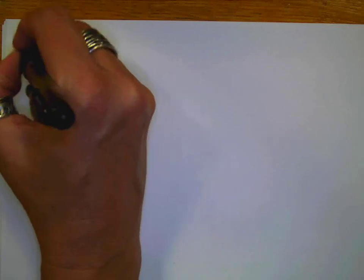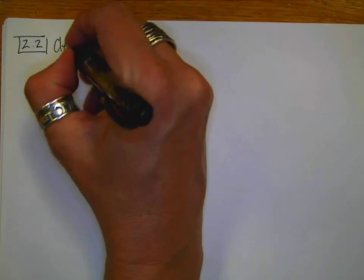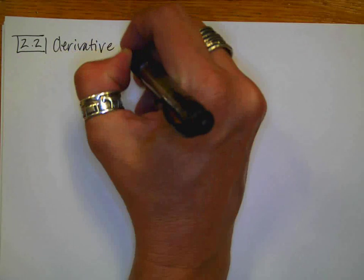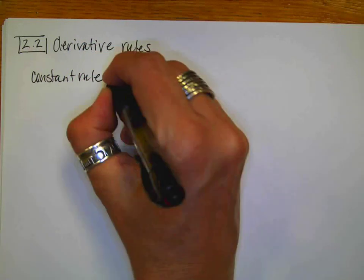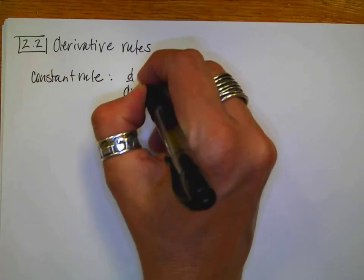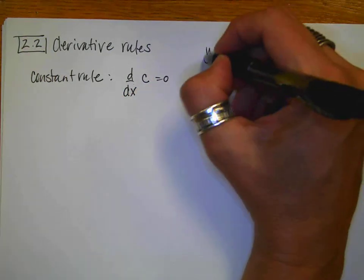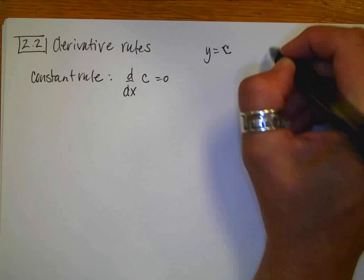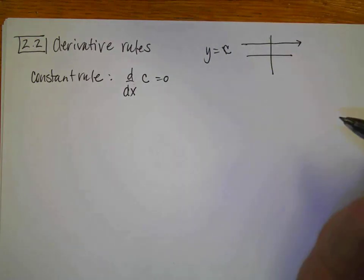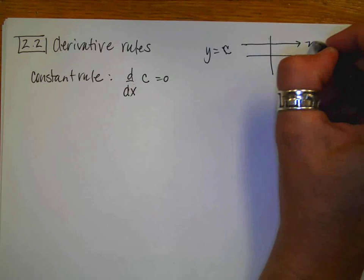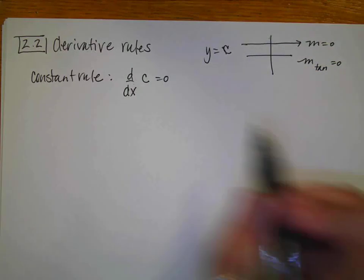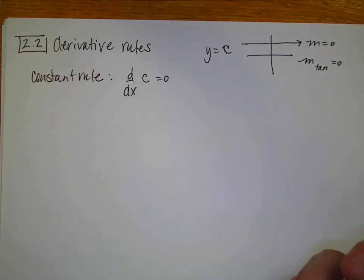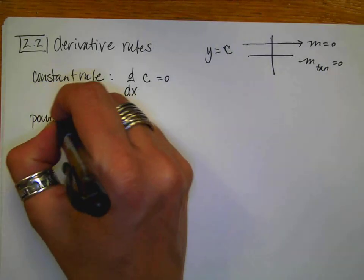That's it for 2.1. For 2.2 we're going to talk about some derivative rules, just to refresh your brain. The first is the constant rule: if I take the derivative of a constant, I get 0. If y equals a constant I have a horizontal line, the slope of a horizontal line is 0, so the slope of the tangent is also 0 - which is why the derivative of a constant is 0.